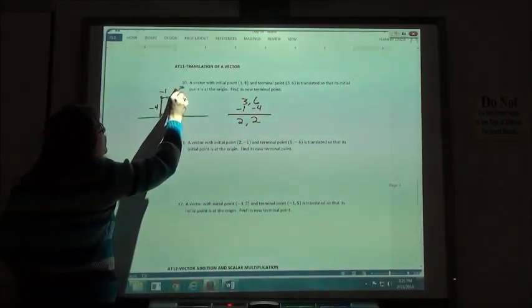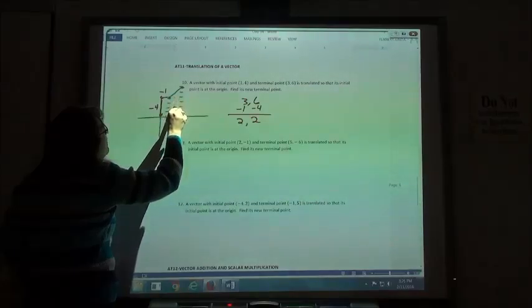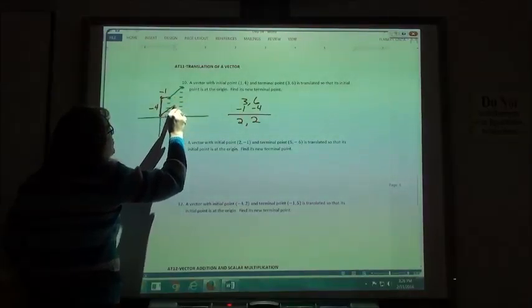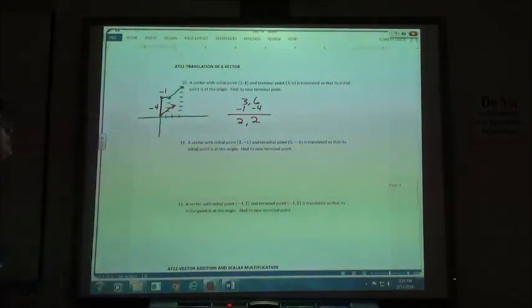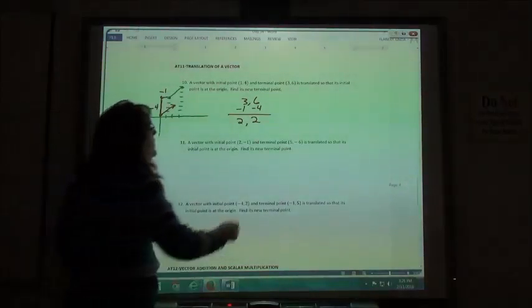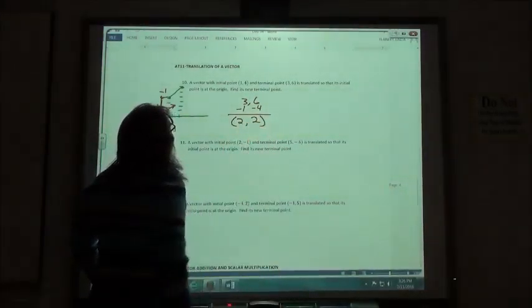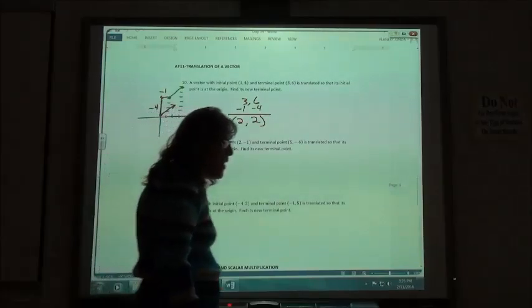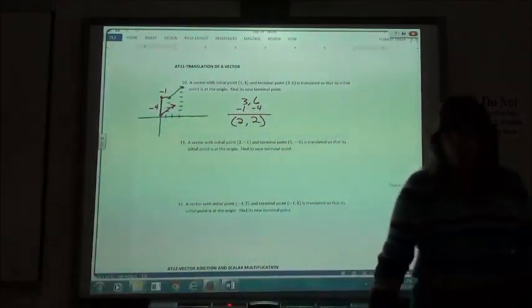If I go to the left 1 and down 1, 2, 3, 4, now my vector is going like that and would be at 2, 2 if I could draw straight. And so my new terminal point there is at the point 2, 2.